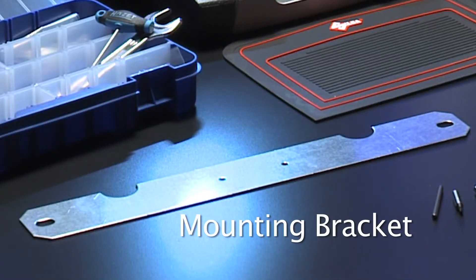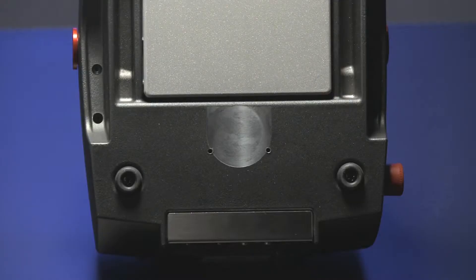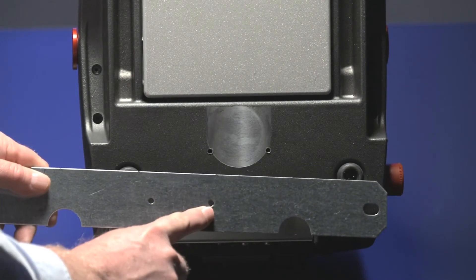Futura's mounting bracket should be used to secure the unit to a workbench for mobile use. To install it, the machine should be turned off and unplugged with the tablet and tablet stand removed. With the machine on its back, align the mounting bracket and attach it securely with the screws provided.